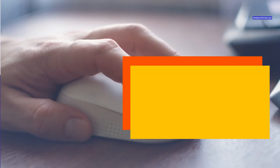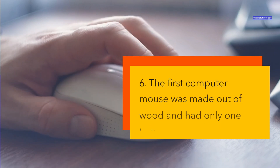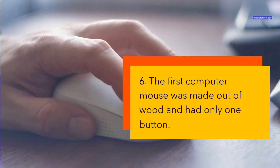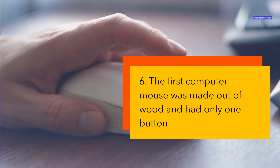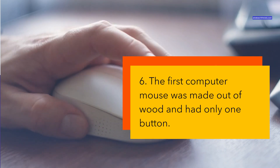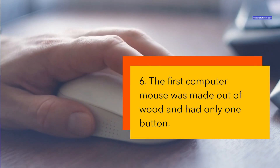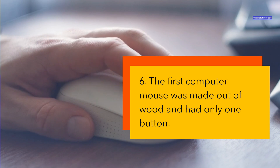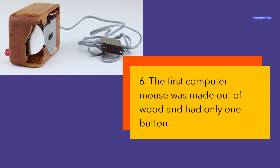The first computer mouse was made out of wood and had only one button. The computer mouse was invented by Douglas Engelbart in 1964 as a device to control a graphical user interface on a computer screen. He called it a mouse because of the tail-like cord that connected it to the computer. The first mouse was made out of wood and had a metal ball that tracked its movement on a surface. It also had only one button, unlike the modern mice that have two or more buttons and scroll wheels.